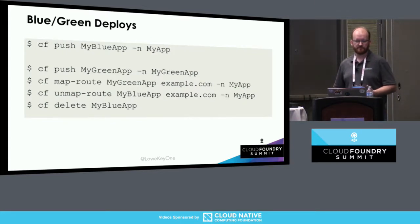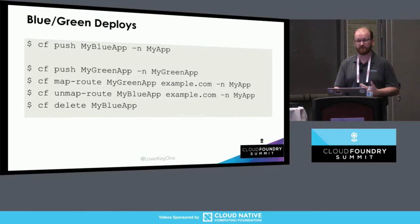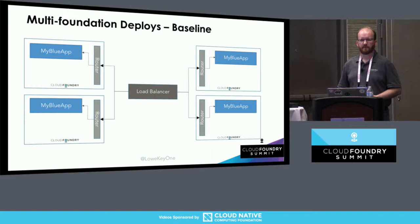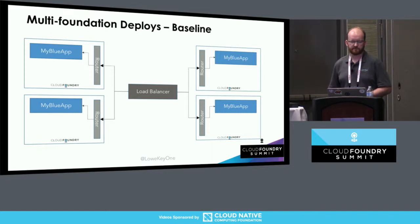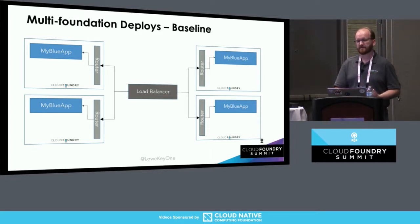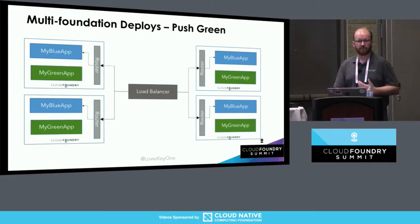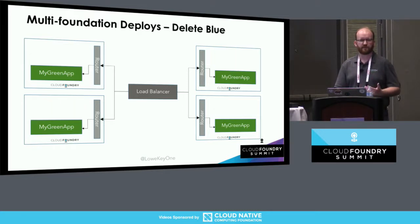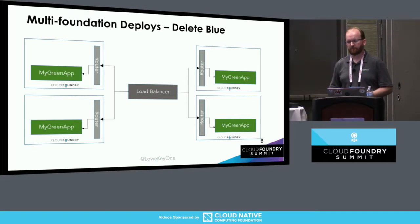In terms of the CF command line, it's really pretty straightforward - you push your blue app, then you have some commands that you run to do the actual blue-green swap when you're ready to do the new version. One of the things that a lot of people are doing is having an environment with multiple availability zones - four's a nice number. The process is actually exactly the same: we have our blue app running, we push our green app, map your routes, unmap your old routes, delete your blue app - you've done a multi-availability zone deployment. Do you want to write commands for that every single time? No. Please don't.